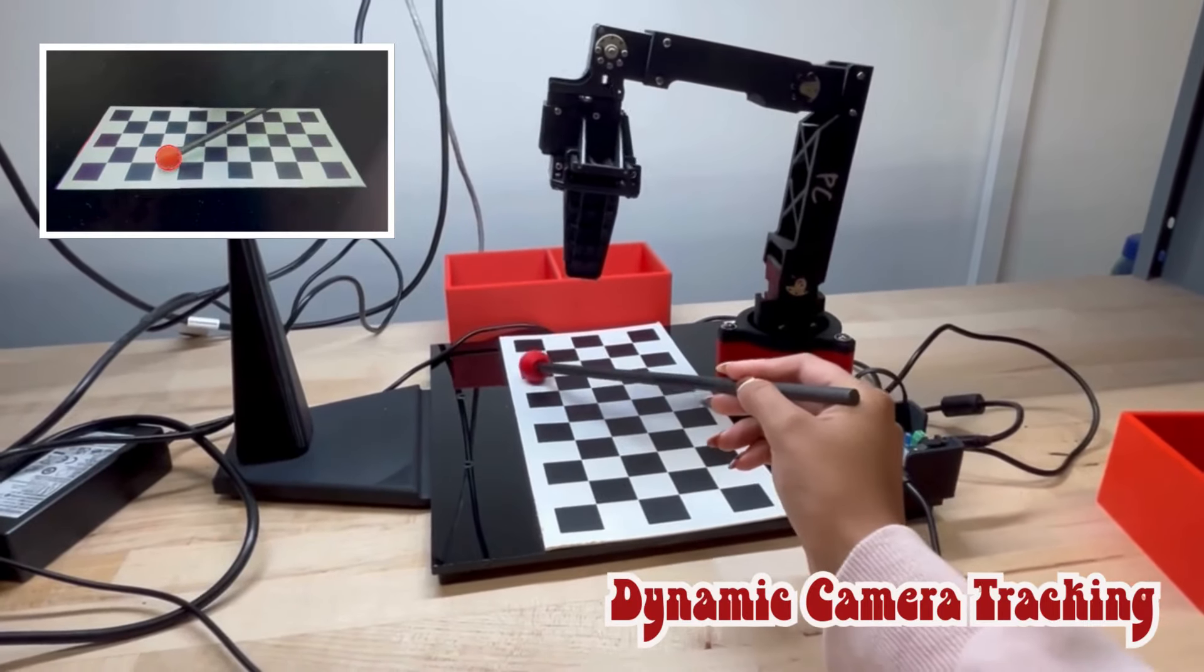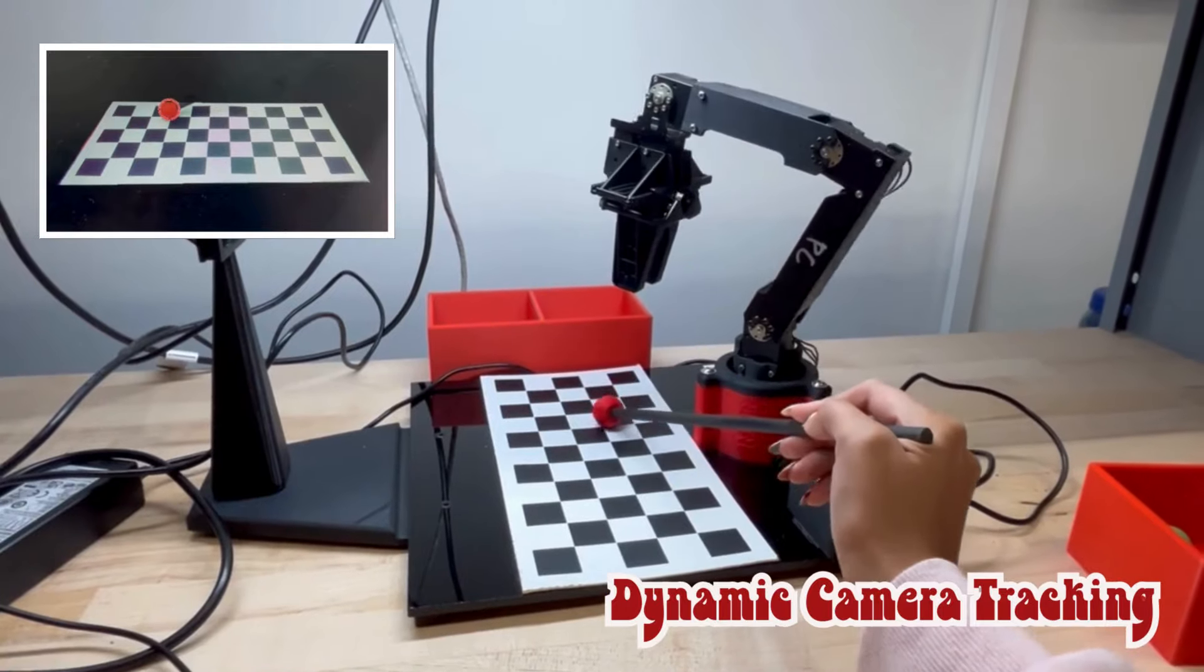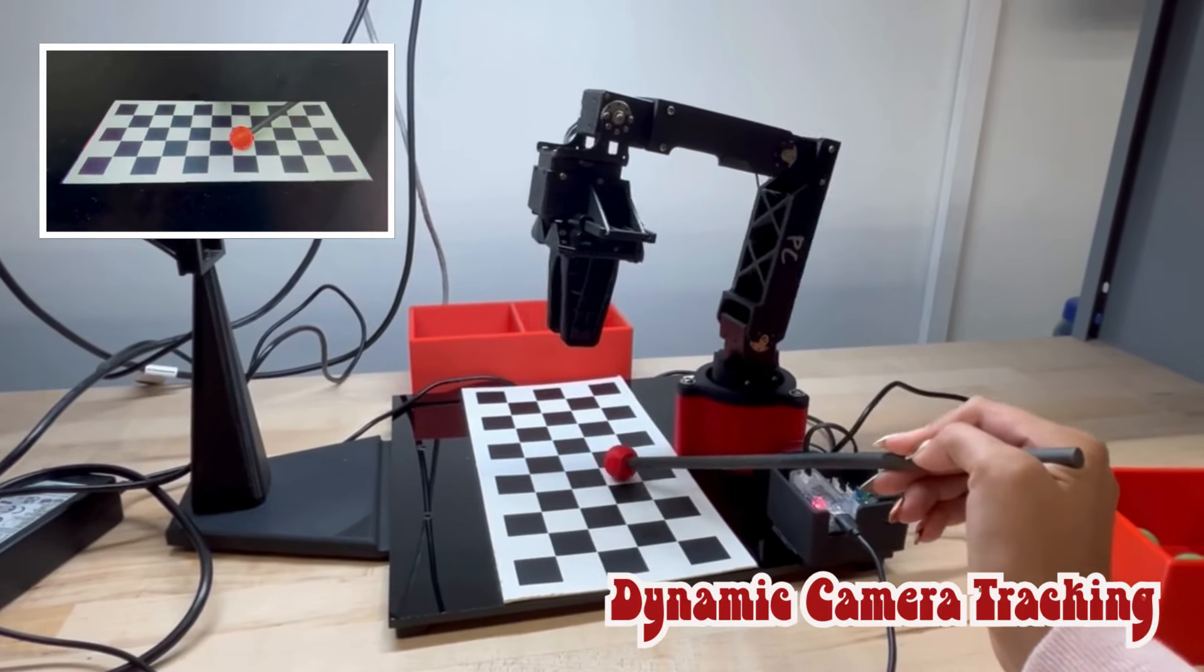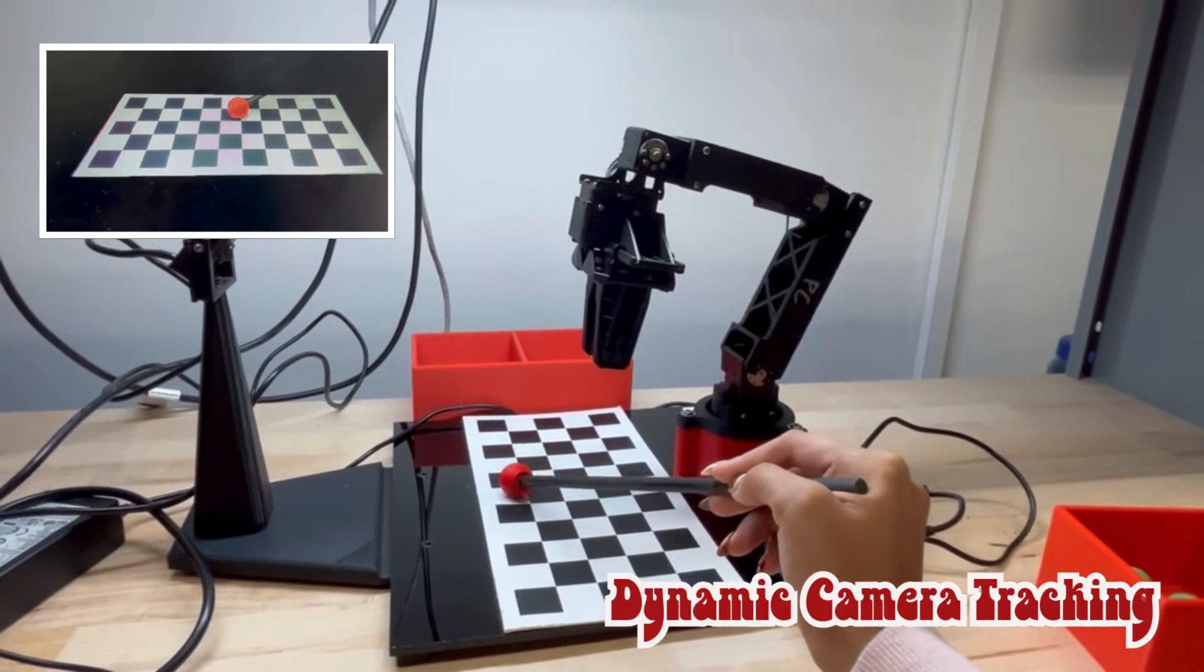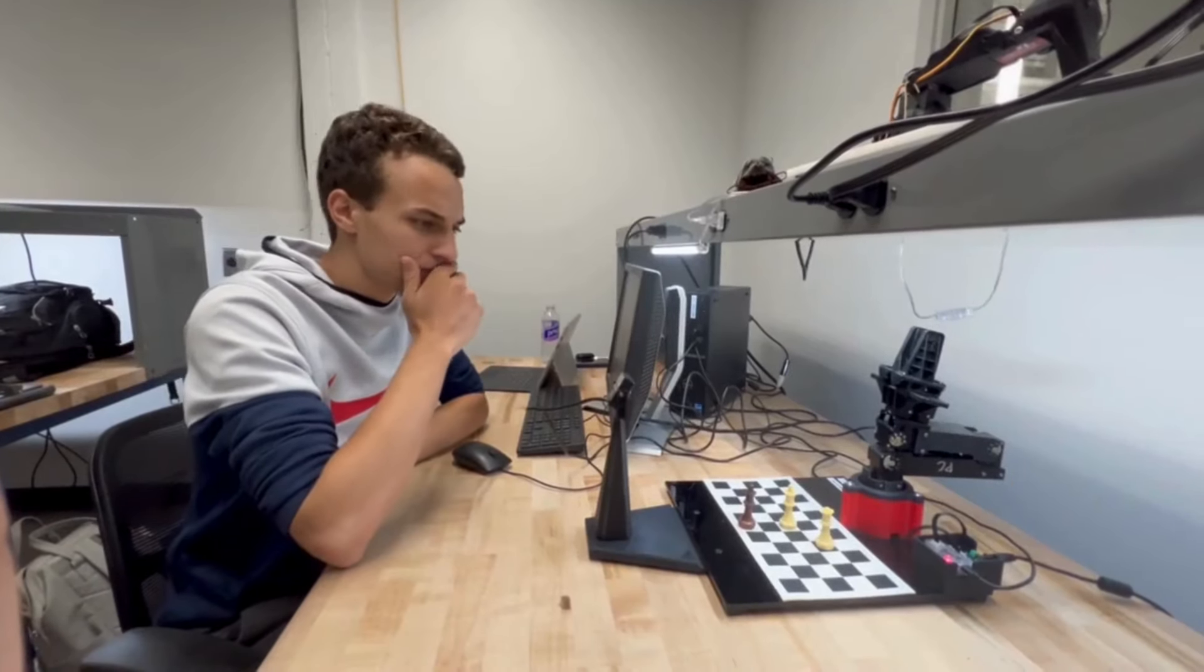In addition, the robot can follow the ball as you move it across the board. You can see what the robot sees in the top left and how the robot arm always stays above where the ball is. And it can even beat us in chess.